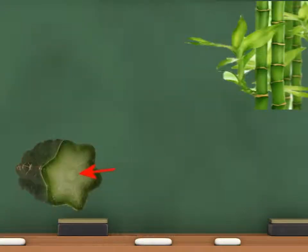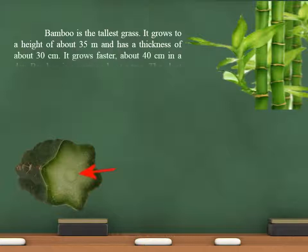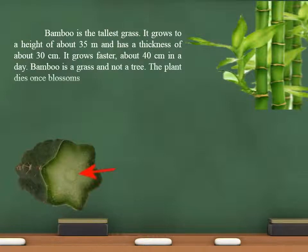Bamboo is the tallest grass. It grows to a height of about 35 meters and has a thickness of about 30 centimeters. It grows faster — about 40 centimeters in a day. Bamboo is a grass, not a tree, and the plant dies once it blossoms.